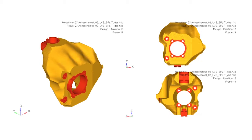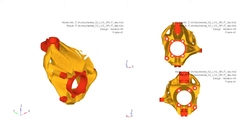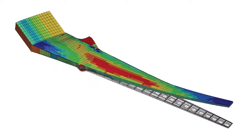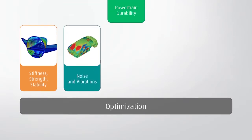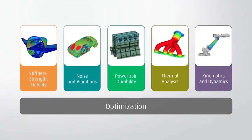Altair Optistruct is a modern structural analysis solver for linear and nonlinear problems under static and dynamic loadings. Optistruct is the market leading solution for structural design and optimization. Many Altair customers worldwide utilize Optistruct to analyze and optimize structures for their strength, durability, and noise, vibration, and harshness characteristics.